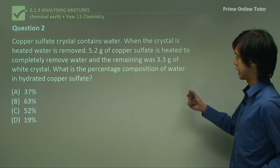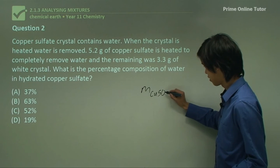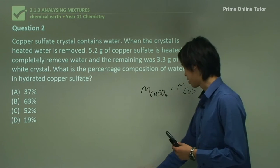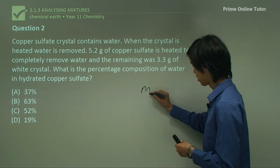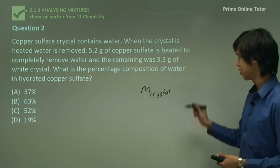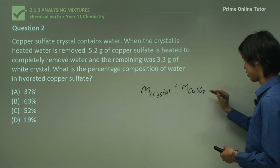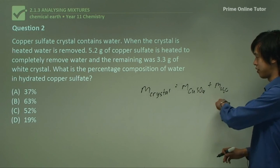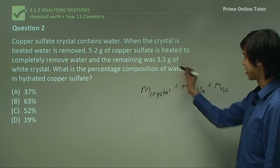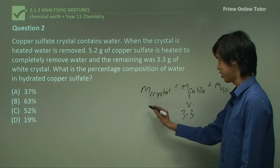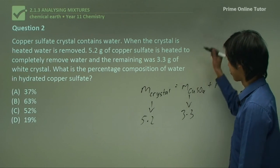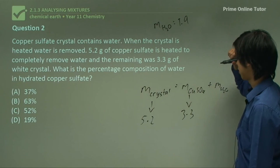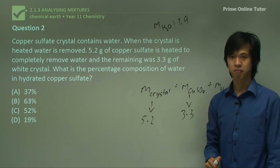Okay, so how do we work out the percentage composition? Well, first we need to know what the mass of the water is. So the mass of the blue crystal is equal to the mass of the CuSO4, which is the copper sulfate, plus the mass of the water. Now, if we want the mass of the water, all we have to do is subtract these two. So we know that this is 3.3, and we know that this one is 5.2, so the mass of the water is 1.9 grams.